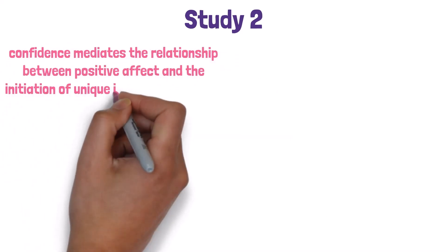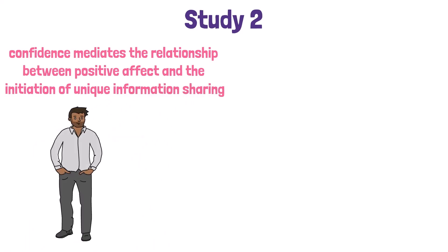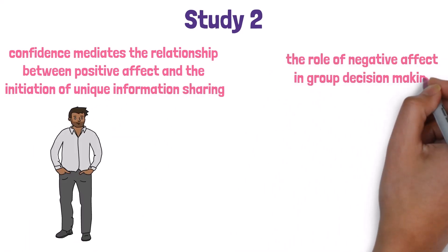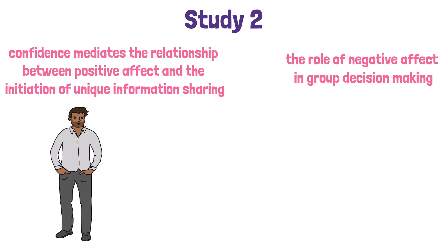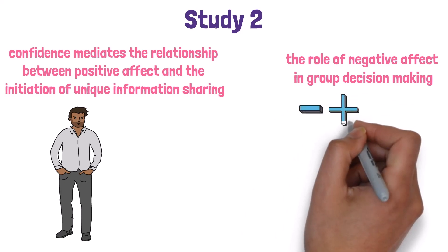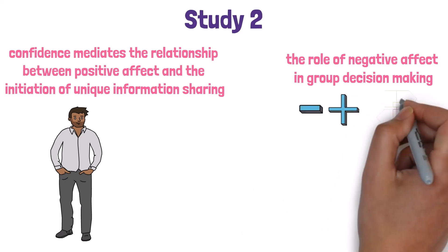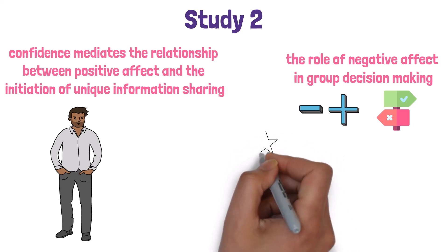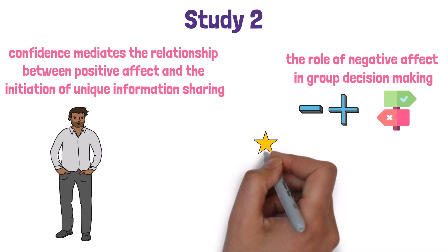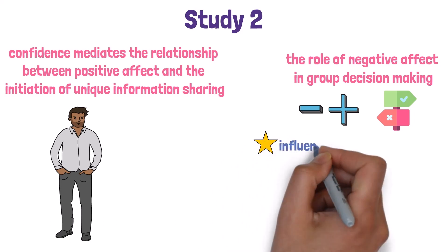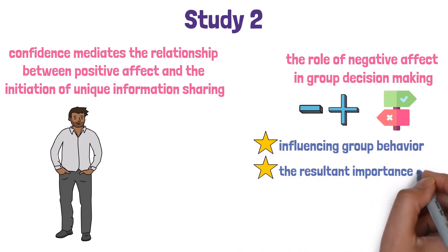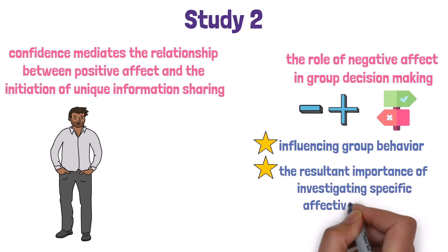Study 2 built upon this base by showing that confidence mediates the relationship between positive affect and the initiation of unique information sharing. Additionally, Study 2 investigated the role of negative affect in group decision-making and how negative and positive affect concurrently influence decision-making when groups are composed of members experiencing each. The results are discussed in terms of the role affect plays in influencing group behavior and the importance of investigating specific affective patterns.